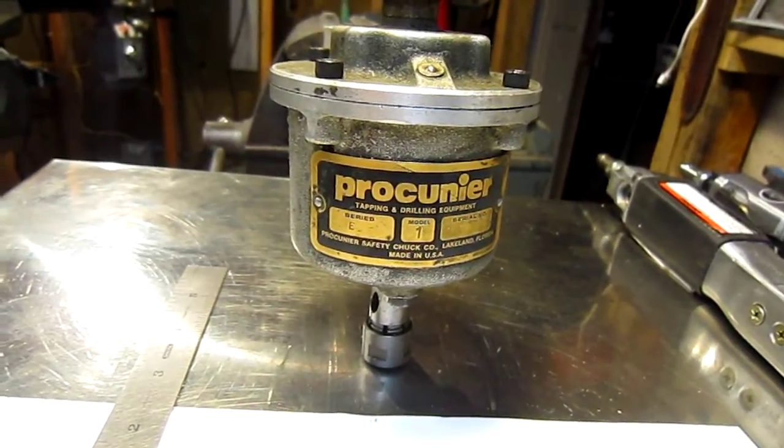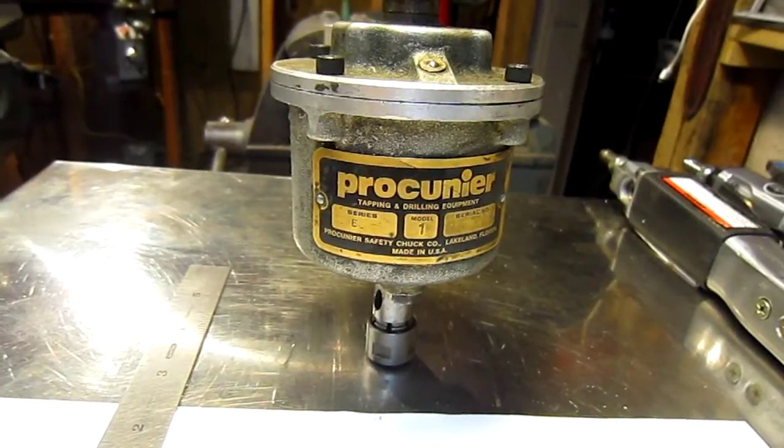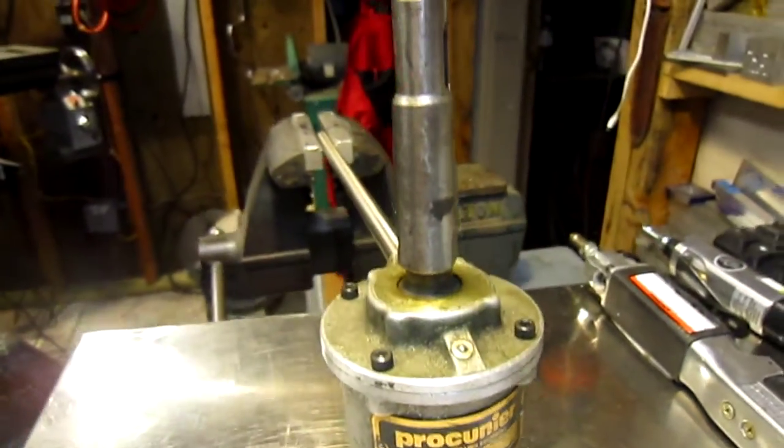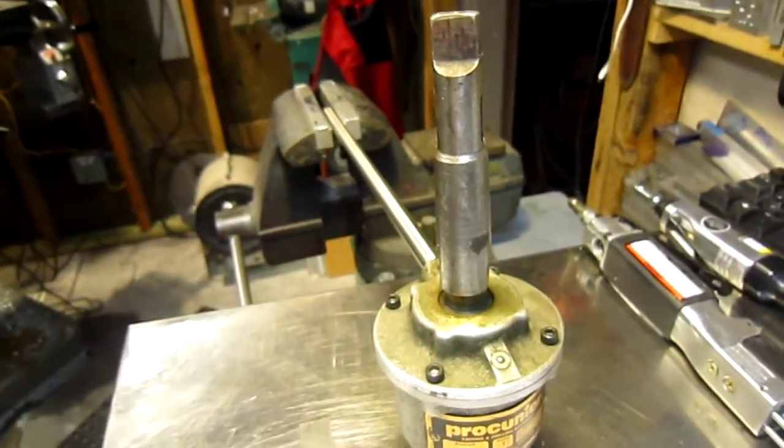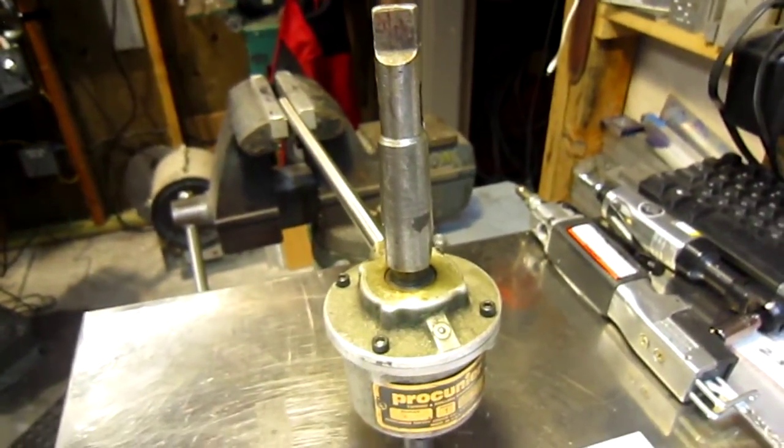It's a Series E Model 1. It has a Morse Taper 2 shank and I've got a 3 sleeve on it, 2-3 sleeve, since my drill press is a Morse Taper 3.